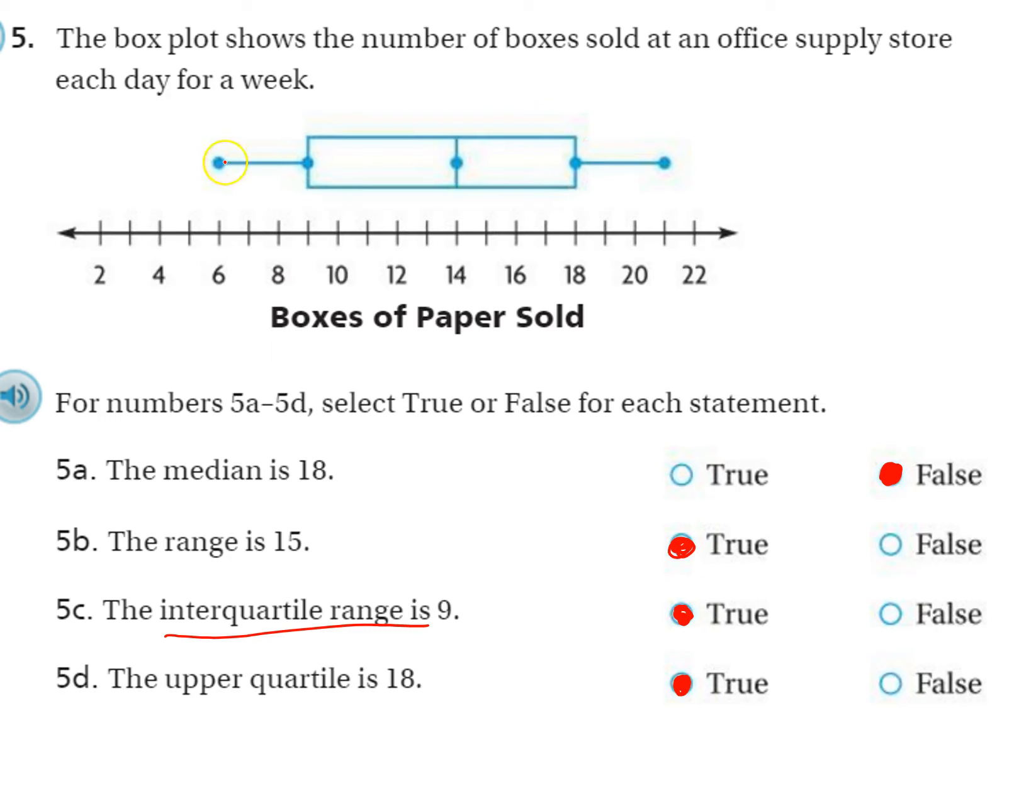And then you need to know that this little dot on a box plot is the least value. This dot is the lower quartile. This dot, the next dot, is the median. The dot after that is the upper quartile, and the last dot over to the right is the greatest value in the box plot.